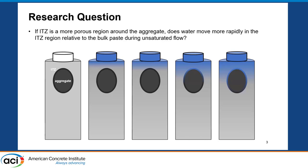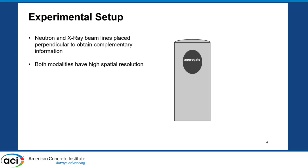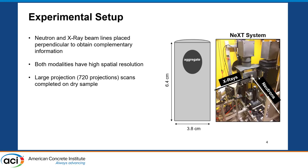We thought we could combine neutron and X-ray imaging to get complementary information, as both modalities have very high spatial resolutions. We made concrete samples that had a single coarse aggregate and then tested using the NeXT system. Our neutrons and X-rays were perpendicular to one another to get that complementary information. We did large projection scans of the dry sample before water was added, and then a series of sparse projection scans during water ingress at 60 projections per hour, giving a temporal resolution of one hour.